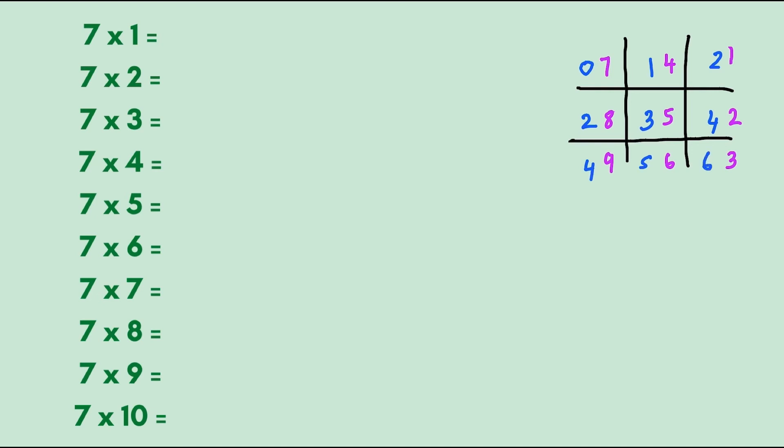Let's try: seven times one is seven, seven times two is fourteen, seven times three, twenty-one, seven times four is twenty-eight. Seven times five, thirty-five. Seven times six, forty-two. Seven times seven, forty-nine.